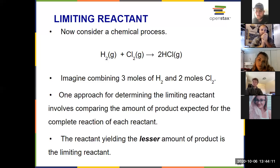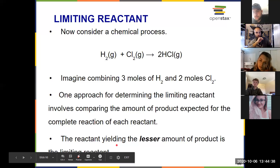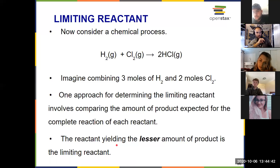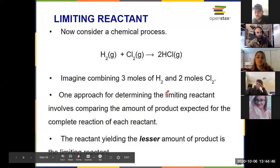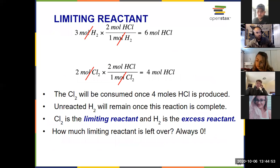And the way we do that, how we determine the limiting reactant, is we take each of the reactants and just calculate how much product they could make if we used all of it. And then whichever one makes less of the product is the limiting reactant. So I take both of those reactants, hydrogen gas and chlorine gas, and I use stoichiometry from 4.3 to figure out how many moles of HCl they could make. I use their stoichiometric ratio, so it's two moles of HCl for every one mole of H2 or two moles of HCl for every one mole of Cl2.